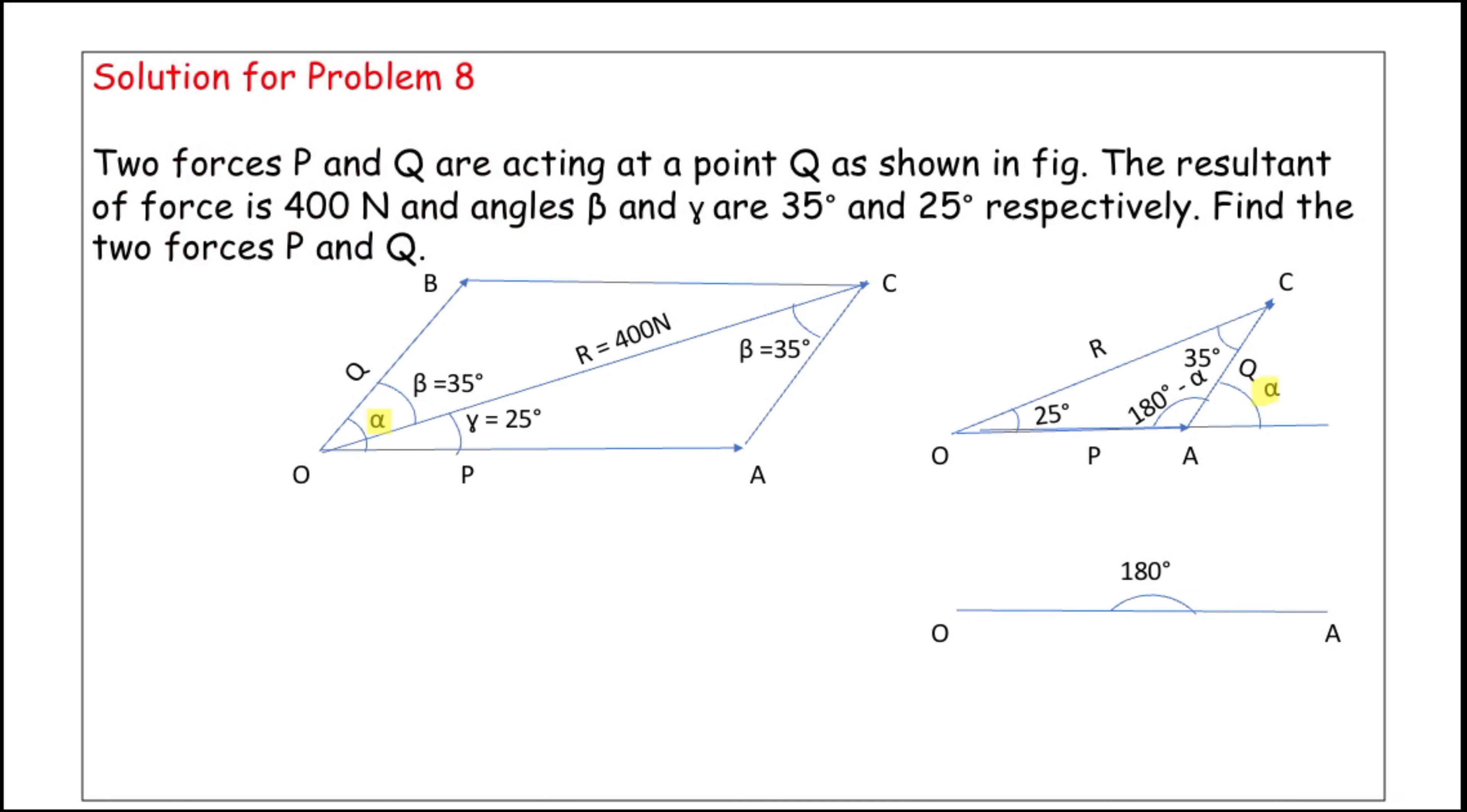Now see the diagram of the parallelogram. The point O has on the x-axis the force P, and on the y-axis the force Q. In the middle of that, the diagonal is R equal to 400 Newton as given.